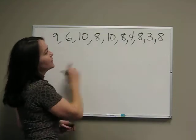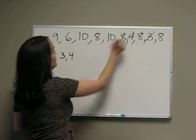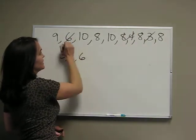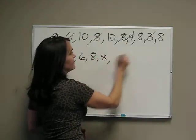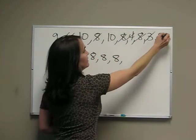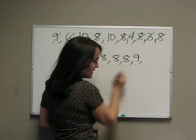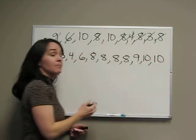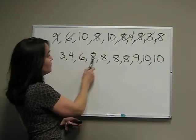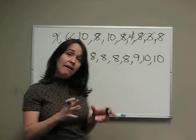I see that I have a 3, 4, 6, 8, another 8, another 8, 9, 10, and another 10. Make sure I have 1, 2, 3, 4, 5, 6, 7, 8, 9, 10 pieces of data, so I have them all.